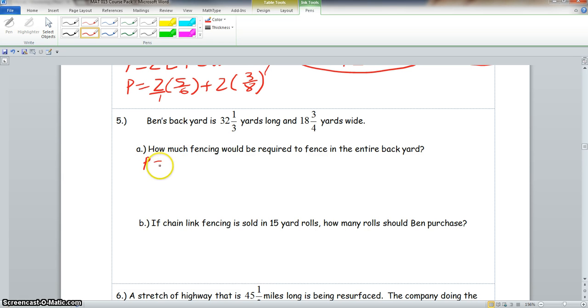So we would have perimeter is equal to 2 times the length, which is 32 and a third, plus 2 times the width, which is 18 and 3 fourths. Now, we have to change these mixed numbers to improper fractions. So we would have 2 times, 32 times 3 is 96, plus 1 is 97 over 3, plus 2 times,